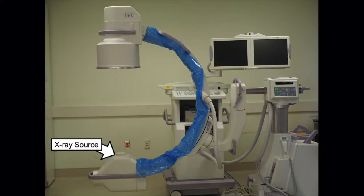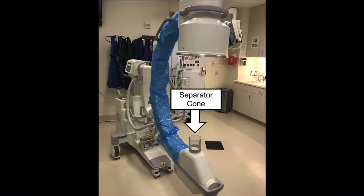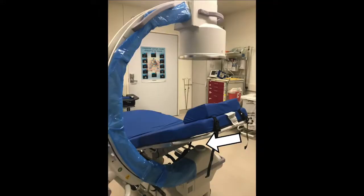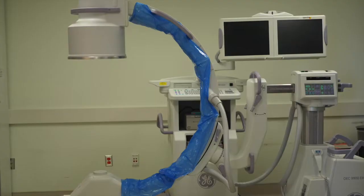This is the X-ray source. The X-ray beam travels from the source through the patient to the image receptor, and converts the X-rays into an image which is projected on the monitor. This is a separator cone, sometimes called a spacer. It is often removed to fit the unit around a bed or operating table. If the separator cone is removed, it is important to keep the patient at least 30 centimeters, or about a foot, away from the X-ray source to avoid skin injury.